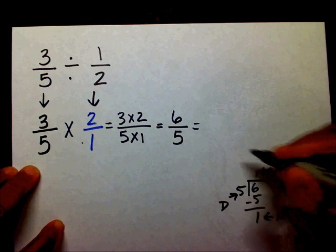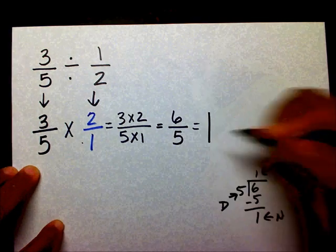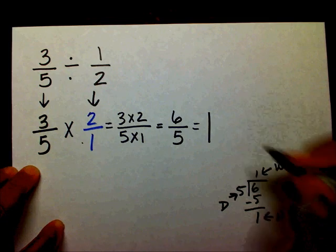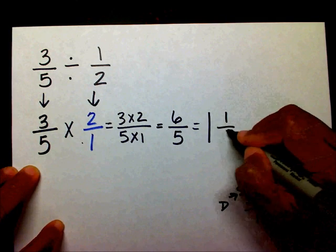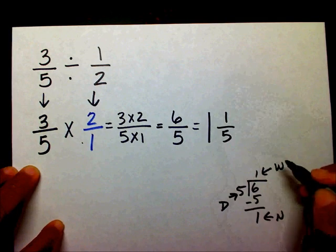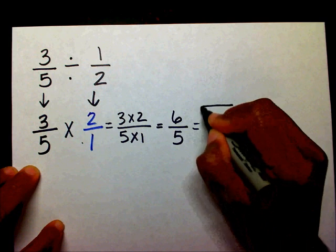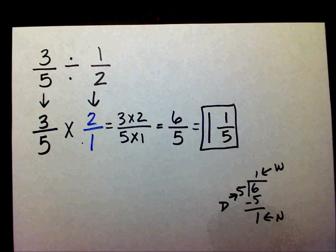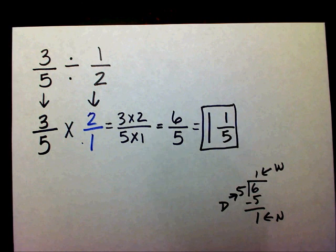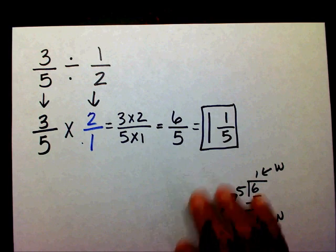My whole number is one, my numerator is one, and my denominator is five. And this is in lowest terms. Alright, let's try another one.